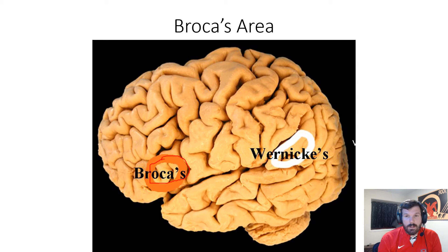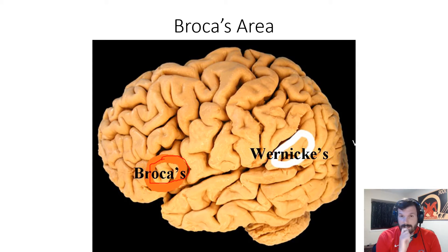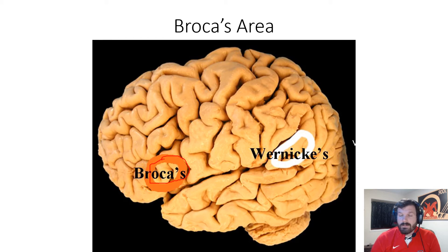Broca's area controls the motor movement of the mouth while you are speaking — your jaw, tongue, and lips. If Broca's area were damaged, you could still read and write, but when you attempted to speak, the muscle memory of how your mouth moves to enunciate certain sounds would simply not be there, making it very difficult to start or form sentences.